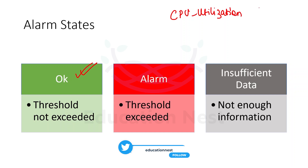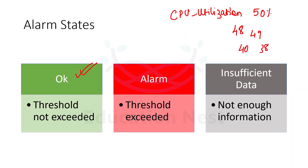I have kept the threshold as 50%. So till the time my CPU utilization is 48, 49, 40, 38 — I will not get notified, my alarm state would be OK. But as my CPU utilization goes beyond 50% for a specified period of time, then my alarm will go into the Alarm state. It means that the threshold we defined is getting exceeded.